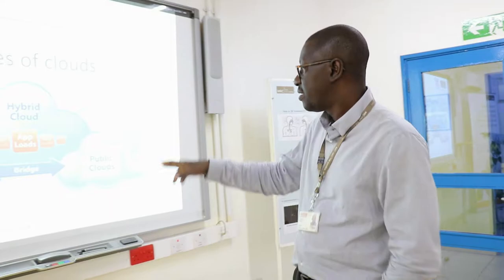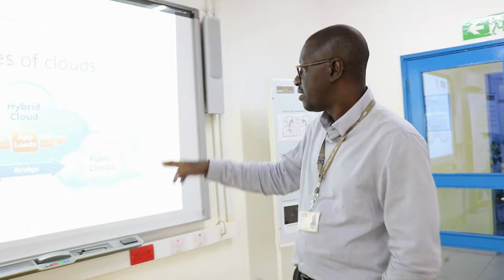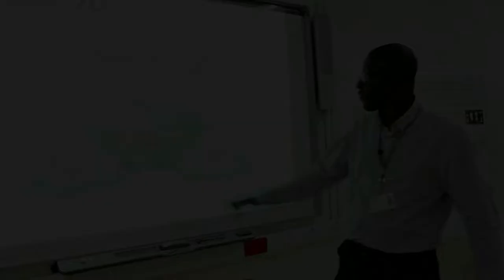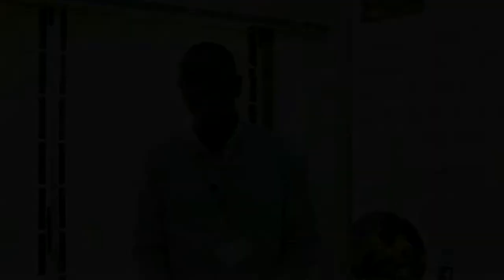We also have the public cloud — when we say 'the cloud,' about 70% of the time this is what we mean. That means the cloud out there with Microsoft, Google, or Amazon, where they have their data centers off our premises. Of course, a combination of private and public cloud is what we refer to as the hybrid cloud.